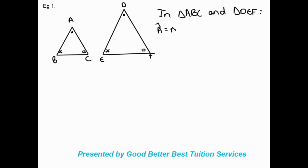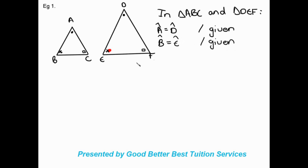Angle A is equal to angle D — reason: given. Angle B is equal to angle E — reason: given. Angle C is equal to angle F — reason: given. If the diagram gives us the angle values or markers, we can use 'given' as our reason.